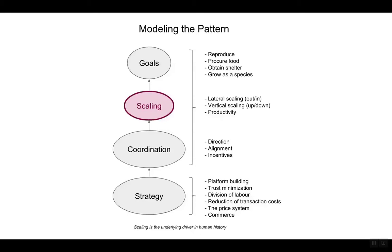As humans, we have goals — for example, to reproduce, procure food, obtain shelter, grow species. And to achieve our goals, we scale. And to scale, we coordinate. Some of our coordination strategies include platform building, trust minimization, division of labor, reduction of transaction costs, the price system, and commerce.